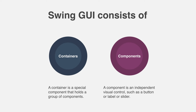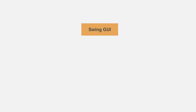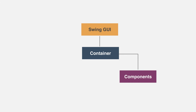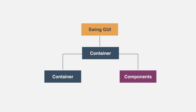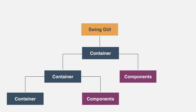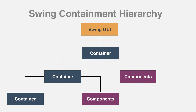In order for a component to be displayed, it must be held within a container. Thus all Swing GUIs will have at least one container. Because containers are also components, a container can hold other containers. This subcontainer can also hold other components and containers, enabling Swing to define what is called a containment hierarchy, at the top of which must be a top-level container.